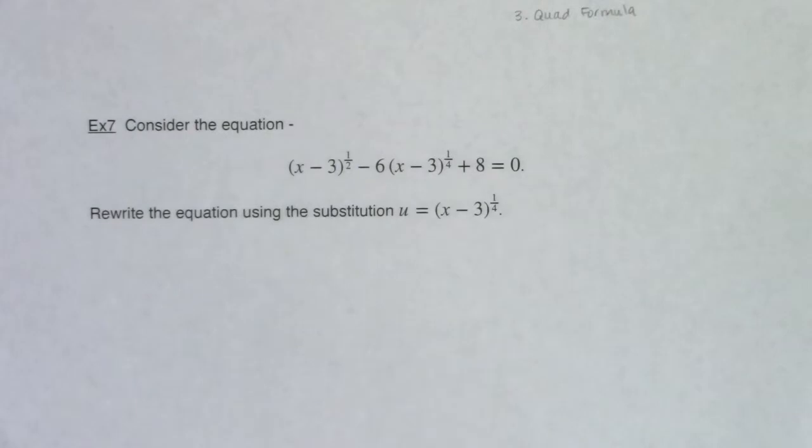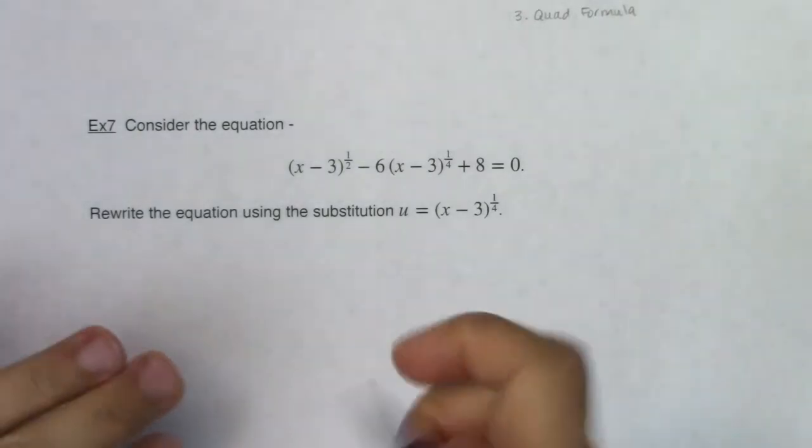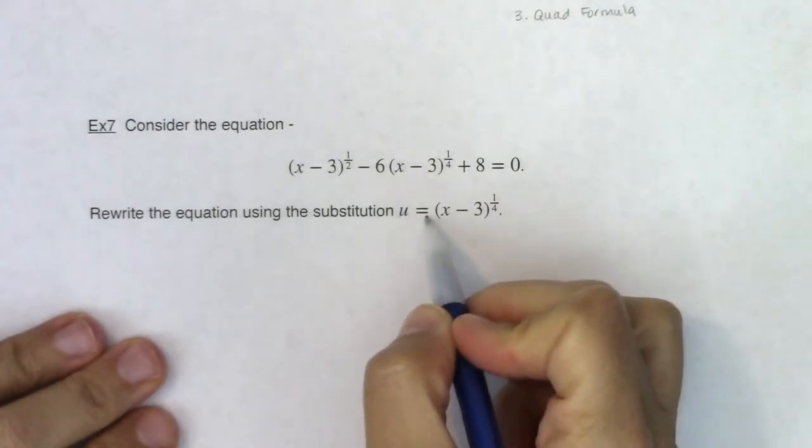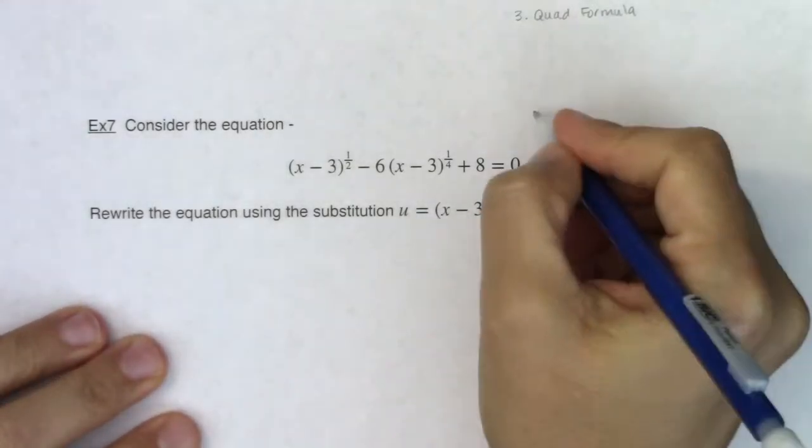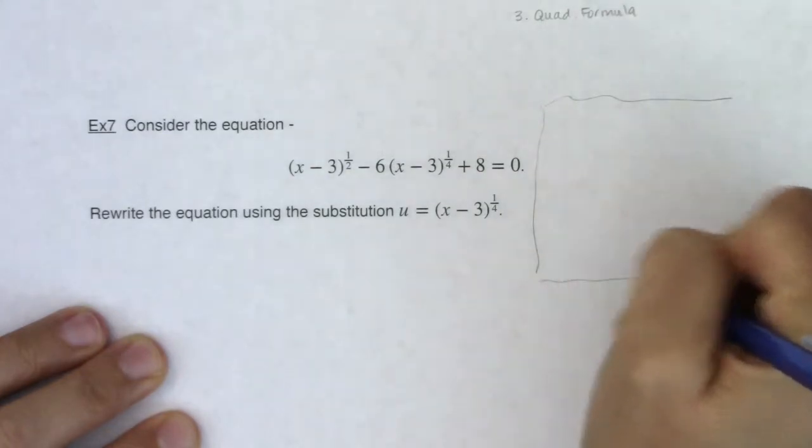Okay Math 31, let's take a look at our next equation and I'm going to give you this u sub. So I'm starting you with u equaling x minus 3 to the 1/4. So let's work some stuff over here.